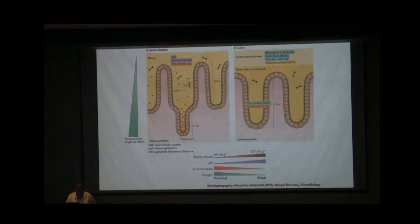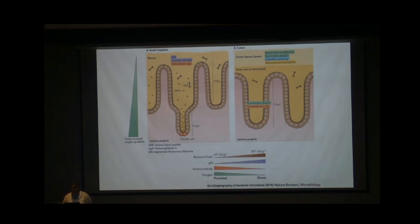We also have immunoglobulins and other antibacterial peptides present in the upper half of the gut, primarily as an evolutionary strategy. The gut evolved so that antibacterials are concentrated in the upper half — because in prehistoric times, animals ate without knowing what was going in — while these antibacterials are almost absent in the lower half or colonic region.